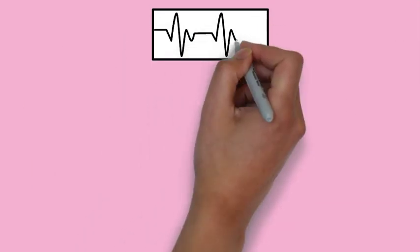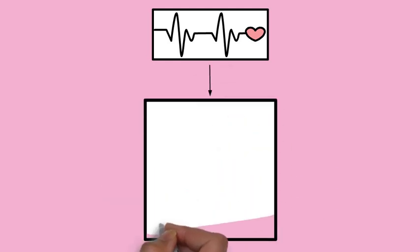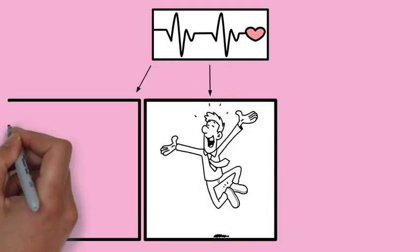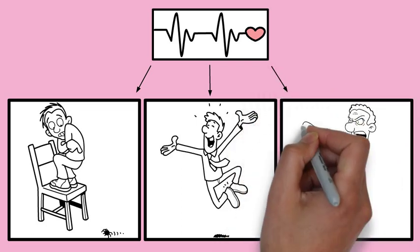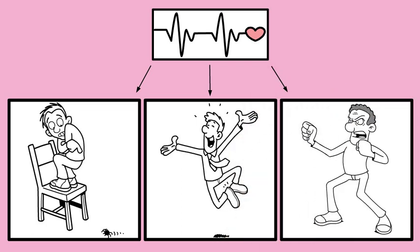For example, your heart beats faster when you are excited or scared or even angry. You are physiologically aroused and look at the external world for explanation. In their view, an emotional experience requires a conscious interpretation of the arousal.